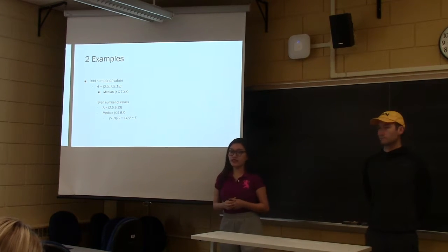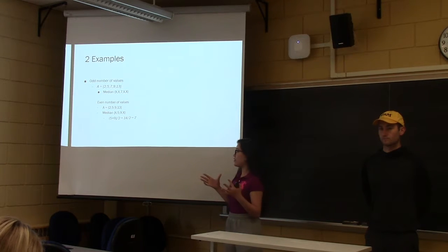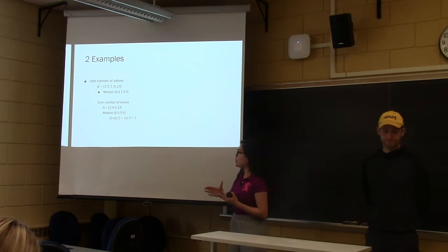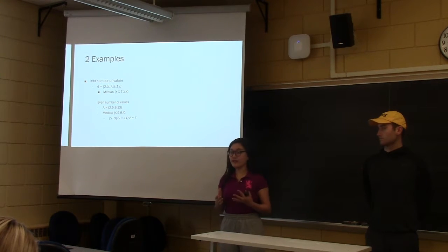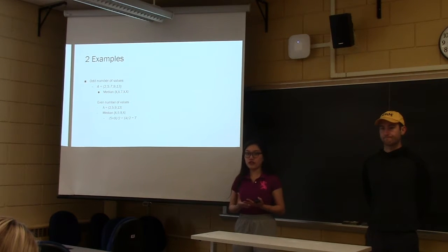And the second example is an even number of observations. So here, obviously, we have four different observations, and so we're left with five and nine. And so what you simply do is, again, find the average of that, or the mean of that, which is adding the two middle numbers and then dividing it by two, so we get seven here.